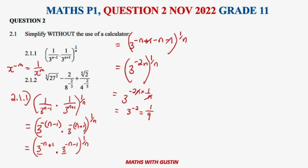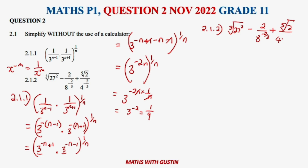Now let's move on to Question 2.1.2, where we are given different numbers that we need to simplify. The expression is: cube root of 27 squared, minus 2 over 8 to the power of negative 2 over 3, plus a fifth root of 2 over 4 to the power of negative 2 over 5.